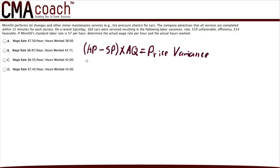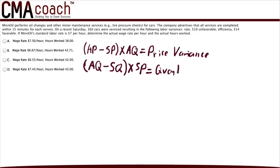Next is the quantity variance formula: open parentheses, actual quantity minus standard quantity, close parentheses, times standard price — and this equals the quantity variance. Since these are cost items, a negative variance is a favorable variance because actual cost is lower than standard, and a positive variance is an unfavorable variance because actual is higher than standard.